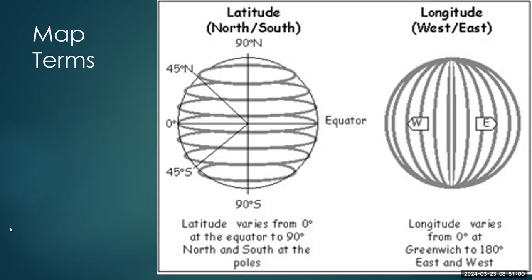It's good to familiarize yourself with longitude and latitude and how to read them. If someone gives you a longitude and latitude coordinate, you should be able to find where that is on a map. You may not know the exact location, but if I ask you what city is located at 43 degrees north, 76 degrees west, you should be able to tell me, given a map, about what city is located there. There's a good chance something like that would show up on the test, because they want to make sure you know how to locate somewhere on a map.